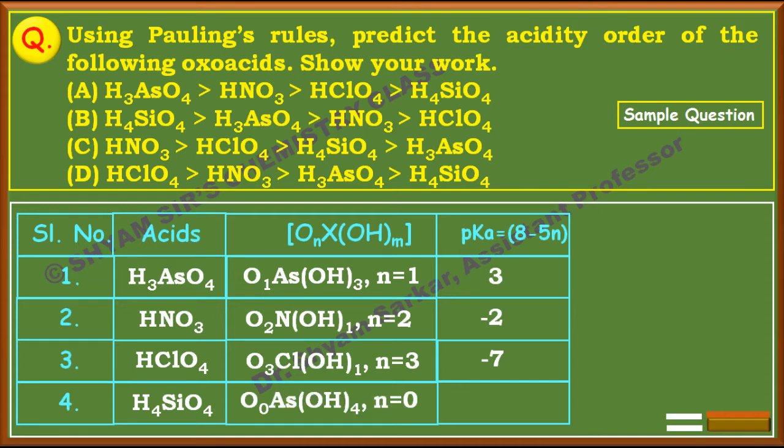For H₄SiO₄, it can be written as O₀Si(OH)₄, so n = 0. Putting n = 0 into the formula gives pKa = 8 − 5×0 = 8.